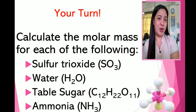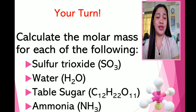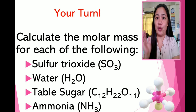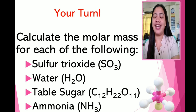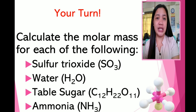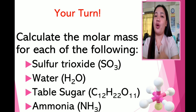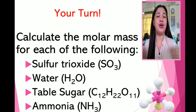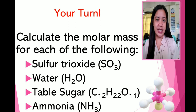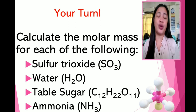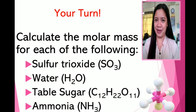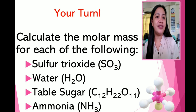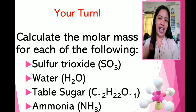Now it's your turn. You have to calculate the molar mass for each of the following substances: first is sulfur trioxide, next is water, then table sugar, and the last would be ammonia. The chemical formulas are all given. Go back to your LMS course and answer the given problems on the screen. Review and follow the steps in calculating the molar mass, then submit your solutions with answers. Do not forget to use your periodic table of elements, scientific calculator, and your science journal.